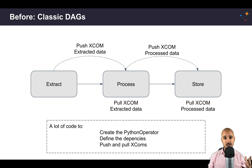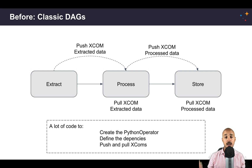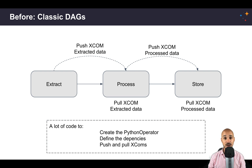On top of that, when you use XCOMs you actually create implicit dependencies between your tasks, which means you have to look into the Python callable functions to know if a given task pushed an XCOM and if another task pulled it. Now we have seen how time-consuming it is to create a DAG with XCOMs in Airflow 1.10.x. Let's discover how it is with Airflow 2.0 and the Taskflow API.